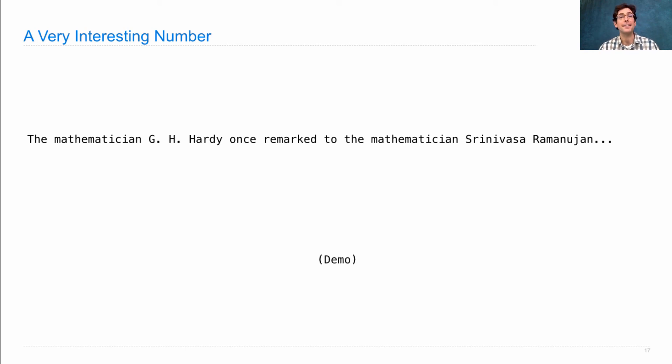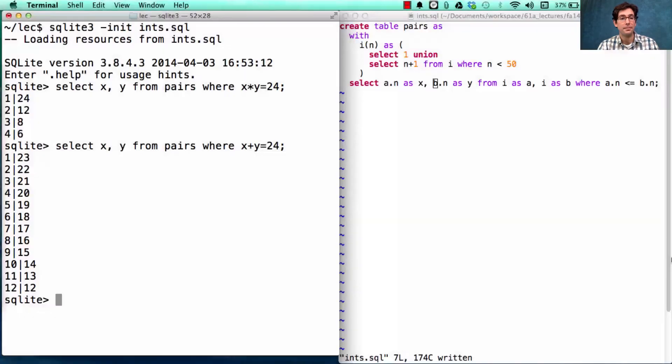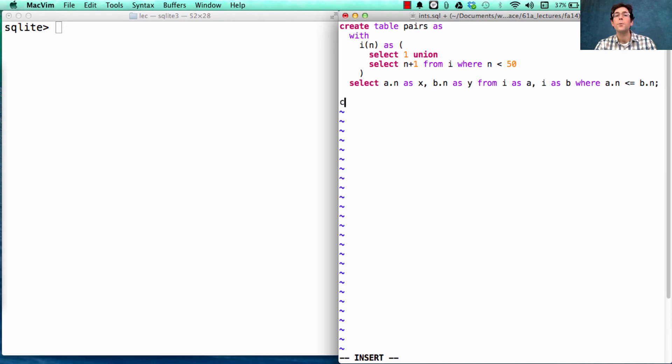So how shall we find all of the numbers that are two perfect cubes sum together in two different ways? So we're creating a table of interest. We're going to use a with clause in order to define the cubes of xy and the cube of x and y sum together as exactly what I just said. Select x and select y and select x times x times x plus y times y times y from pairs.